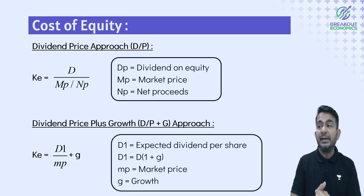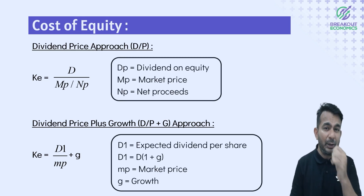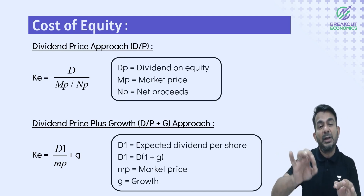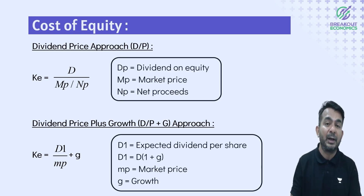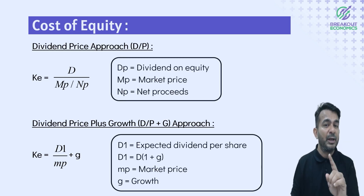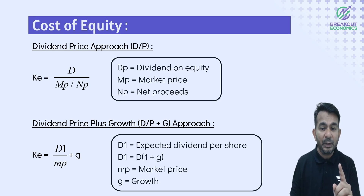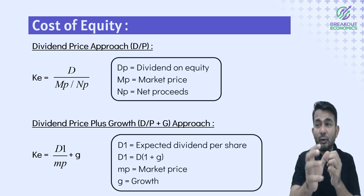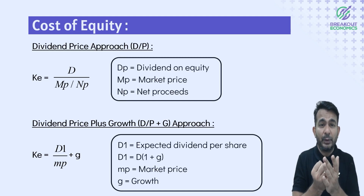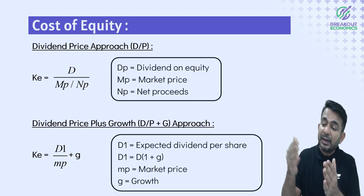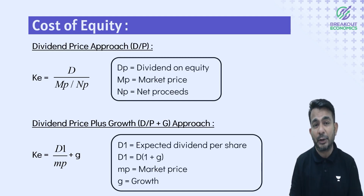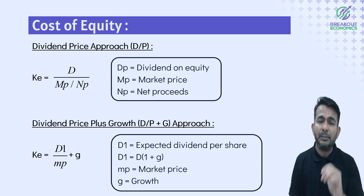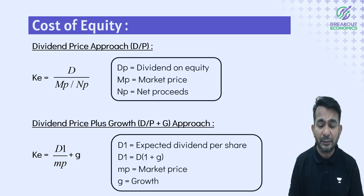If the company pays a growing dividend, then KE = D1 / NP + G. D1 is used, not D, because when raising capital, what matters is next year's dividend. G is the growth rate. So: KE = D1 / NP + G.